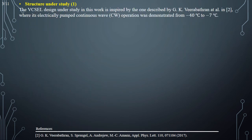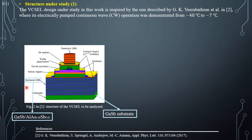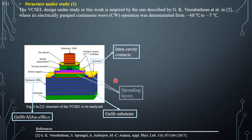The design of the VCSEL we are considering is inspired by the one described in the reference shown here. The entire device is grown on top of a gallium antimonide substrate. Then there is the epitaxial undoped bottom distributed Bragg reflector. On top of that, there are the two intracavity contacts designed to leave the DBRs out of the electrical domain.